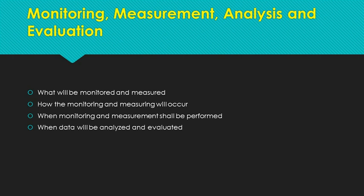The first step is for the organization to figure out what did and didn't work, and why. That means collecting data and turning it into information — don't just look at raw data, make it something usable. The company has to figure out what it's going to monitor and measure, how it's going to do that, when it will monitor and measure, and when data will be analyzed. The evaluation of performance is to determine the effectiveness of the Quality Management System. You'll need to keep documented information as evidence of results.